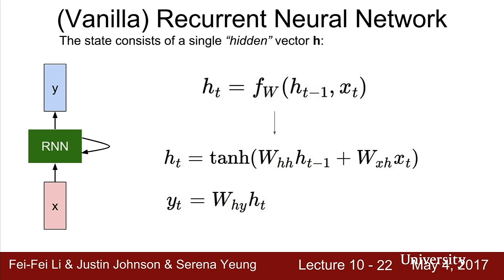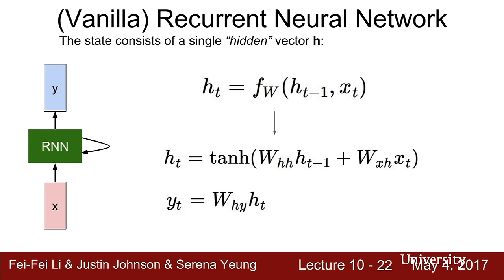The simplest functional form is the vanilla recurrent neural network. We have weight matrix W_xh multiplied against input x_t, and weight matrix W_hh multiplied against the previous hidden state h_{t-1}. We add these together and squash through a tanh to get the next hidden state h_t. We use tanh here for reasons we'll return to when discussing more advanced architectures like the LSTM. If we want to produce an output y_t at every time step, another weight matrix transforms the hidden state into class score predictions.